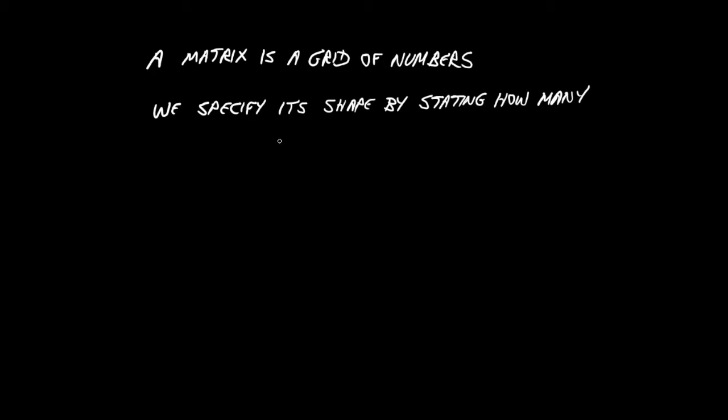Essentially a matrix is nothing more than a grid of numbers, simply a grid of numbers that could be positive or negative or fractional or zeros. And when we specify the shape of our grid of numbers, we do so simply by stating how many rows we have and how many columns.